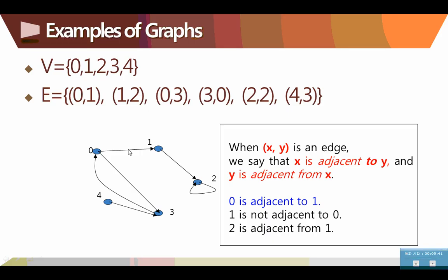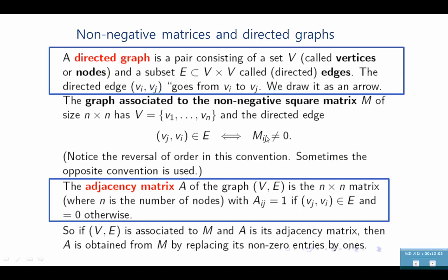Here is the example. If we have five vertices and edges between, like this, then it can be graphed like this. 0,1 means there is an edge from 0 to 1, and 1,2 means there is an edge from 1 to 2. Here, when XY is an edge, we say that X is adjacent to Y, and Y is adjacent from X. Here, 0 is adjacent to 1, and 2 is adjacent from 1. A directed graph is a pair consisting of a set V called vertices or nodes, and a subset E called directed edges. The directed edge goes from Vi to Vj, can be written in this way. And we draw it as an arrow.